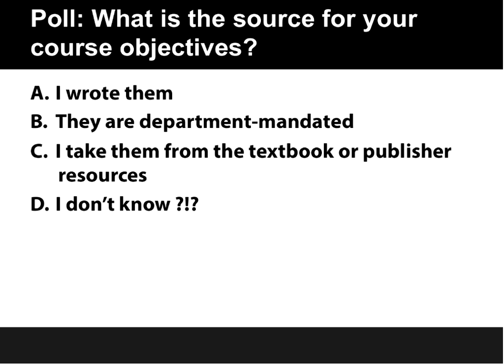It looks like it's about 50-50 right now — half of you write your own course objectives and half of you get them from the department. This is fairly common, particularly when you have a course taught by multiple faculty or instructors, that the department may mandate what your objectives are at least at the course level. You might have more freedom when it comes to individual modules or weekly objectives. The important thing is that you know you have objectives and you know what those objectives are.